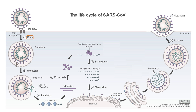Infection begins when a viral particle binds to the ACE2 receptor and crosses the membrane into the cell. Once it has entered the cell it undergoes an uncoating process where the viral material is released. This includes RNA which is translated by ribosomes to generate polypeptides. The polypeptides are broken down by proteolysis to generate functioning enzymes and proteins, including a replicase transcriptase complex which can perform transcription to generate more RNA. Following further translation, a new viral particle is assembled which is then released to cause further infection.